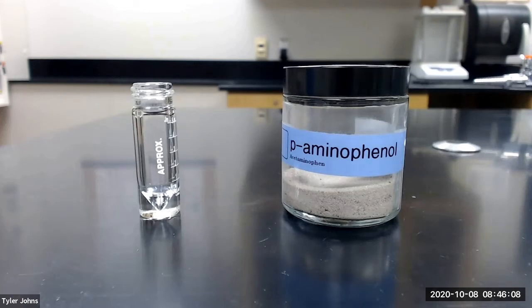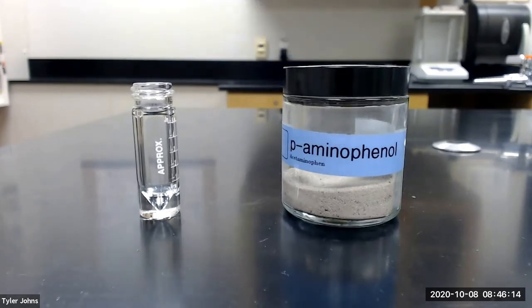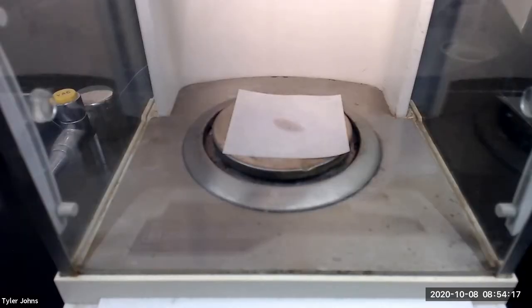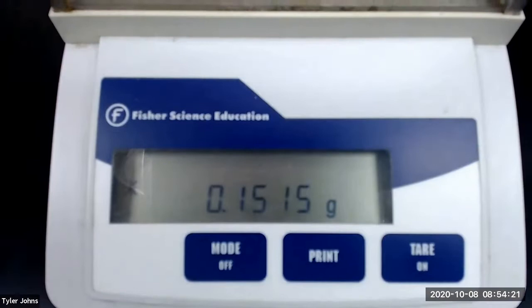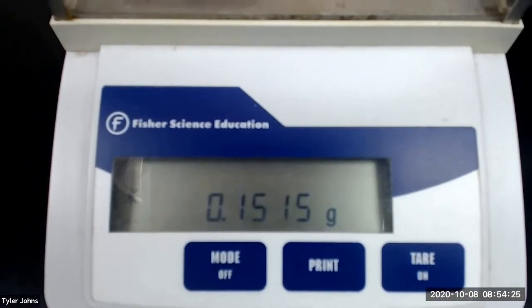The first thing we need to do is weigh out approximately 0.15 grams of P-aminophenol and transfer to a 5-milliliter conical vial. The mass of P-aminophenol that we will be using is 0.1515 grams.